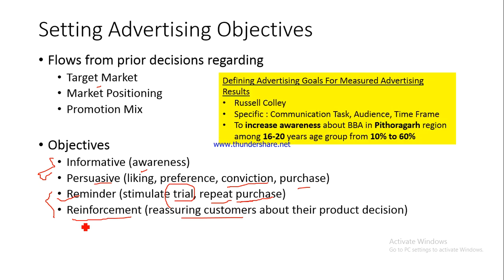Now let us talk about a very important concept known as Defining Advertising Goals for Measured Advertising Results. Why do we set objectives? Because we want to assess our performance against them - once you have set objectives, you can assess whether you have achieved them or not, and determine whether your advertising has been effective. This is known as the DAGMAR approach - D-A-G-M-A-R - given by Rasel Kohli. It says you have to be very specific when determining your advertising objectives.